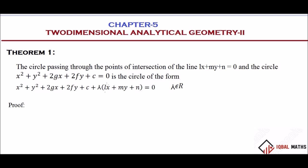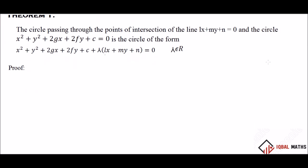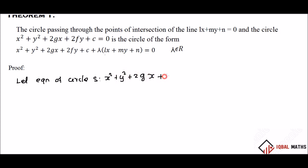Let's prove this. Let the equation of the circle be: x square plus y square plus 2gx plus 2fy plus c equal to 0.